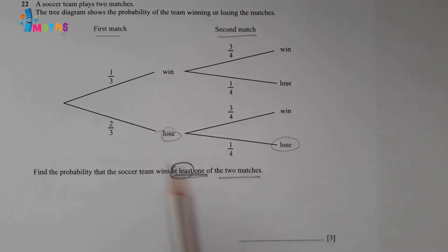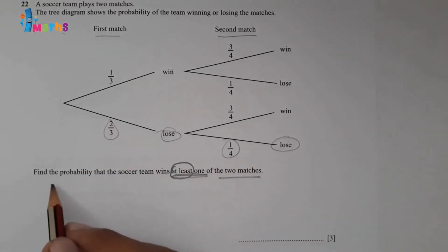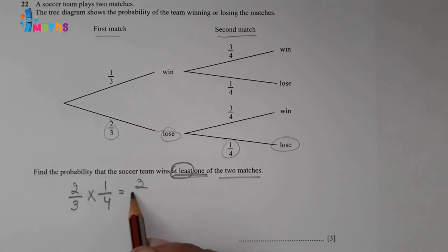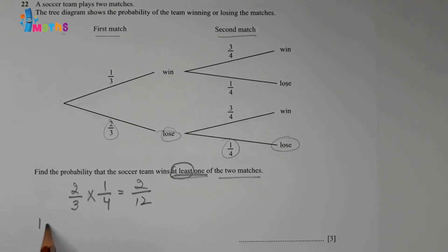So only this option will be excluded, which will be this multiplied by this: 2 over 3 multiplied by 1 over 4. This will equal 2 over 12. So we will be excluding—the remaining, the total probability will be 1. So 1 minus 2 over 12. We can use the equalizing denominator method. So 1 can be written as 12 over 12.